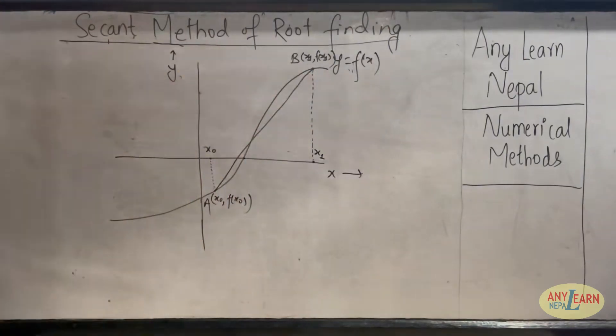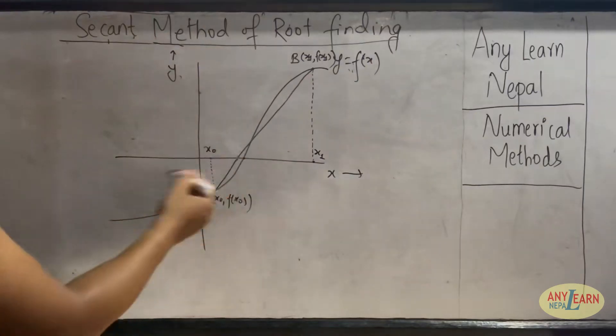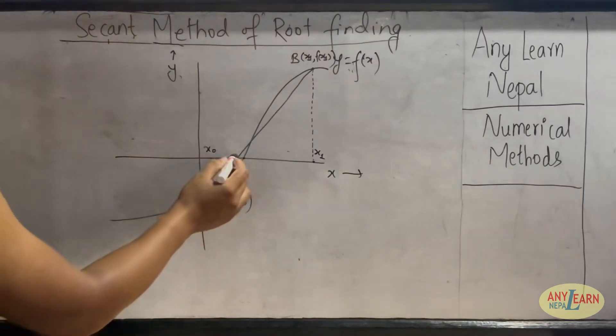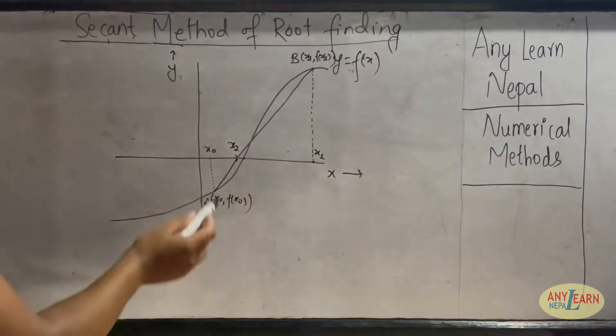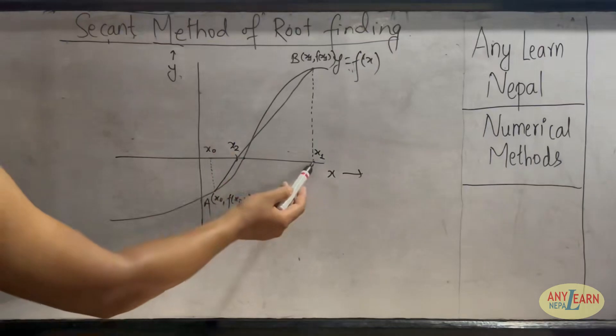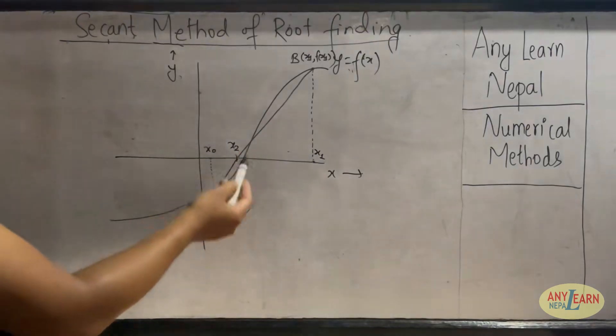So let's first draw a secant joining A and B. As we can see, this secant crosses the x-axis at some point. Let that point be x2.